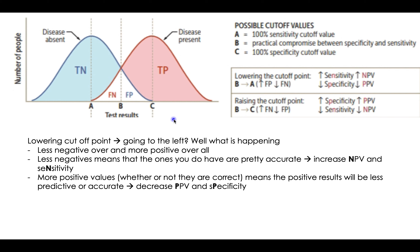This will also work if you raise the cutoff point — then you'll have fewer positives overall. That means your positive predictive value is going to be more accurate, because you don't have as many things that could fall under that overlap region. And then your negative predictive value will be down. So if you go to the right, you'll have fewer positives, so it'll be more accurate. And if you go to the left, you'll have fewer negatives, so your negative predictive value will be more accurate.